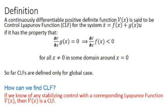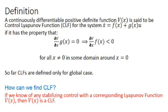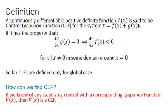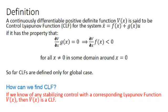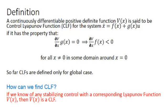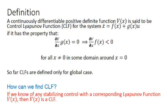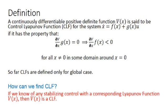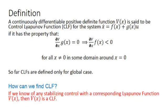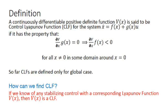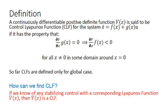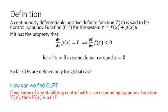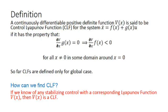That property is: if the partial derivative of V with respect to x times g(x) equals zero, it implies that the partial derivative of V with respect to x times f(x) is negative definite, for all x not equal to zero in some domain around the origin. This is the basic property of the control Lyapunov function.